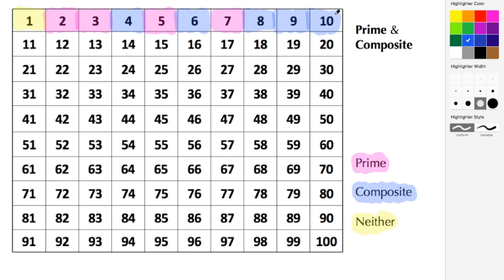Our only even number that can be prime is the number 2. Our remaining even numbers are all composite, so we're going to shade all those blue.